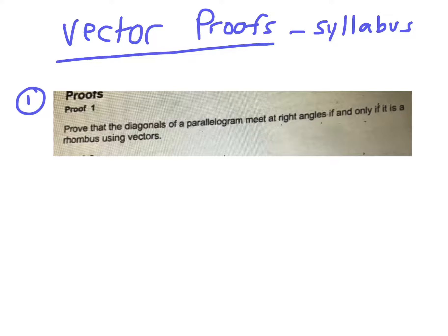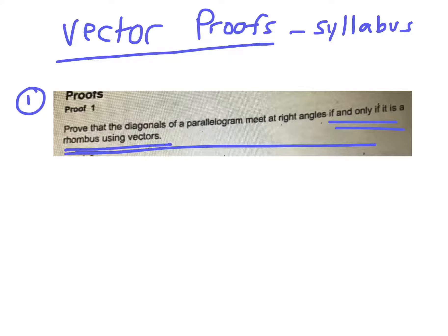I'm going to run through some of these proofs. The first one: proof that the diagonals of a parallelogram meet at right angles if and only if it is a rhombus.